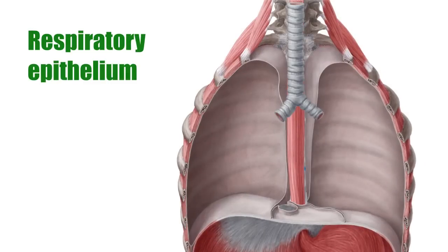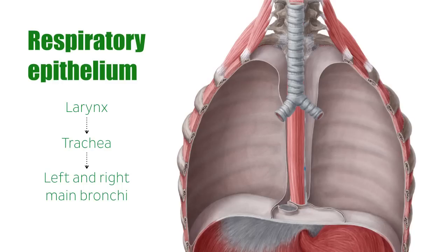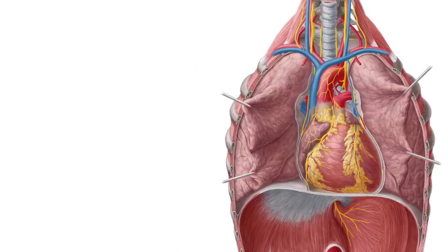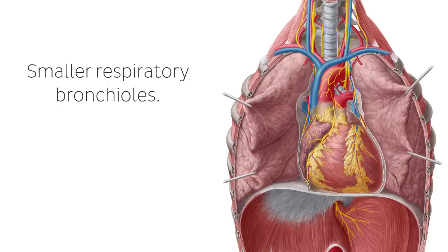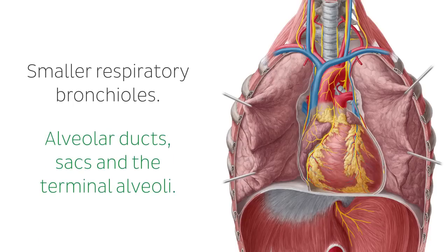The respiratory airways and the lungs are lined with respiratory epithelium. Once the air enters the larynx, it is purely within the respiratory organs. It continues down the larynx and into the trachea, which bifurcates into the left and right main bronchi and then further in a tree branch-like pattern into bronchioles. The bronchioles further divide into smaller and smaller respiratory bronchioles, whose terminal branches contain grape-like bunches of alveolar ducts, sacs, and the terminal alveoli.